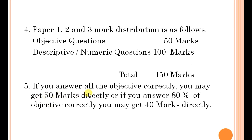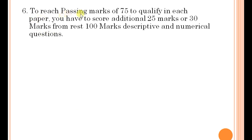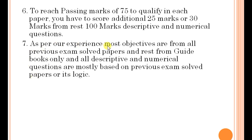If you answer all objective questions correctly you may get 50 marks directly, or if you answer 80 percent of objectives correctly you may get 40 marks. From our experience, getting 50 marks is possible. So to reach the passing marks of 75, you have to score an additional 25 to 30 marks from the remaining 100 marks of descriptive and numerical questions.